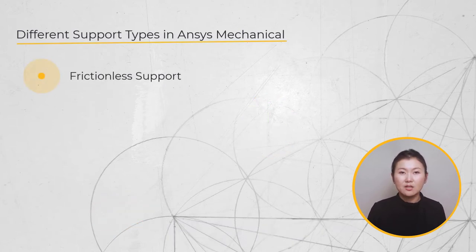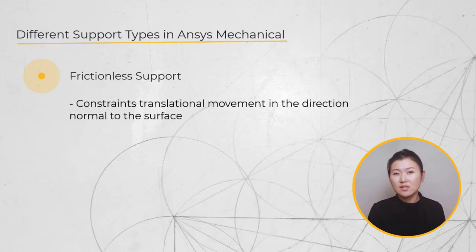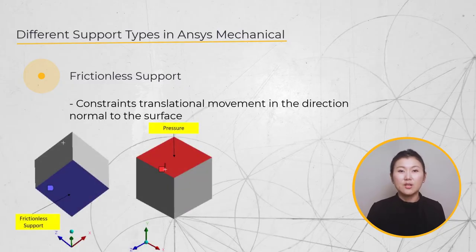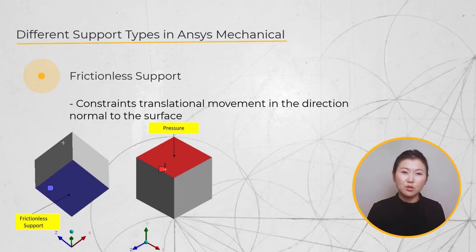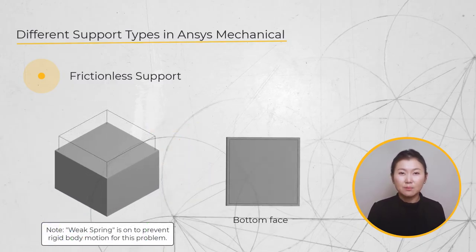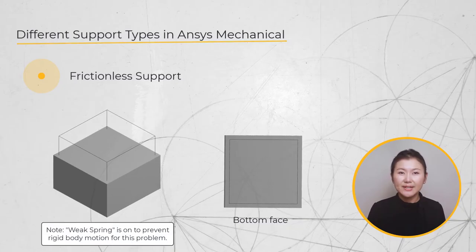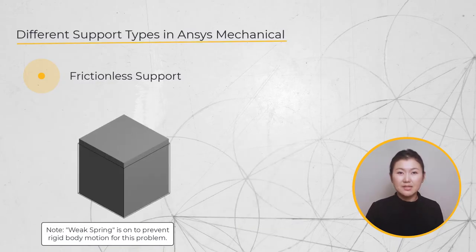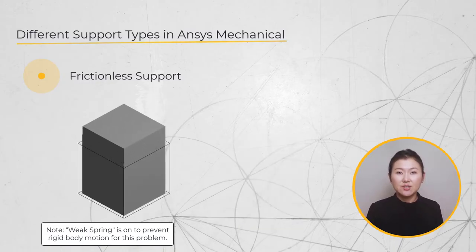The frictionless support only constrains translational movement in the direction normal to the surface. For example, with a frictionless support on one side and a pressure on the opposite face, when the block is compressed the supported face grows, indicating that the frictionless support does not restrict in-plane motion. If using a fixed support, the shape of the face would have remained the same. Similarly, when the block is pulled, the face with the frictionless support will shrink in size since it is free to contract in-plane.